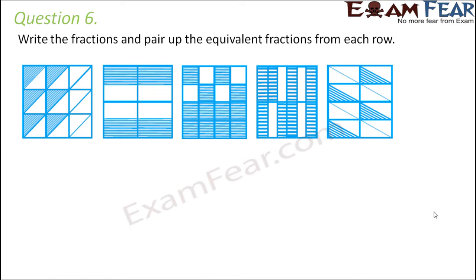Question number 6: Write the fractions and pair up the equivalent fractions from each row. First let us write the fractions — we will see how many triangles there are in each image.